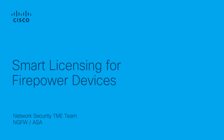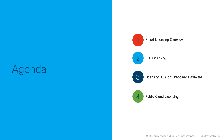Hello and welcome to this video series on smart licensing for firepower devices. This series of 8 videos will hopefully help guide you through the topic of smart licensing and how it applies to both Firepower Threat Defense and ASA firewalls. The whole series covers a general overview of smart licensing, smart licensing for both Firepower Threat Defense and ASA, and finally smart licensing for firepower in public cloud environments. You can either watch all of the videos in order to get a full overview or simply watch the videos that are of most interest.